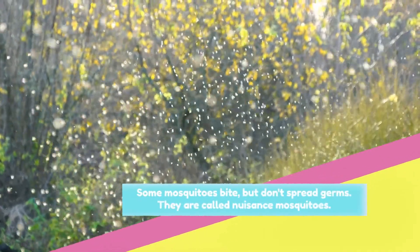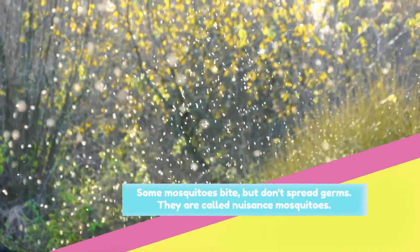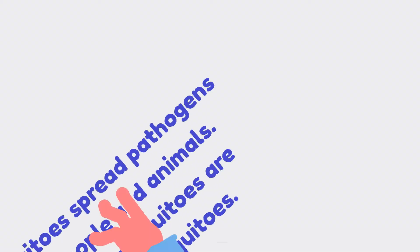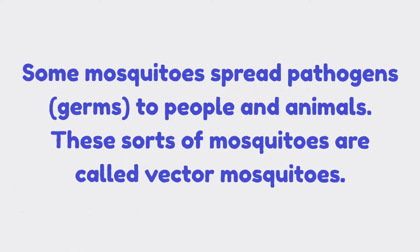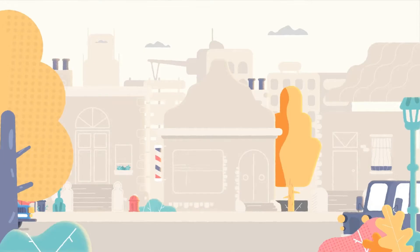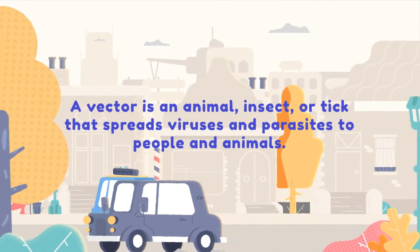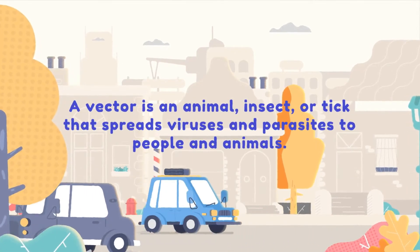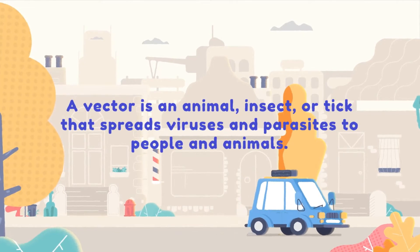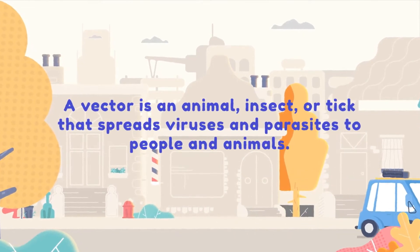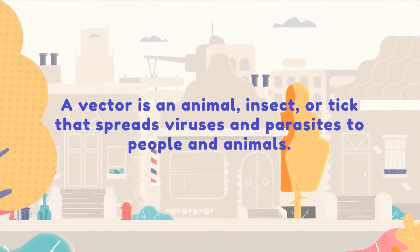Some mosquitoes bite but don't spread germs. They are called nuisance mosquitoes. Some mosquitoes spread pathogens to people and animals. These sorts of mosquitoes are called vector mosquitoes. A vector is an animal, insect, or tick that spreads viruses and parasites to people and animals.